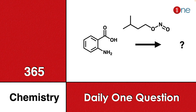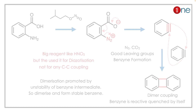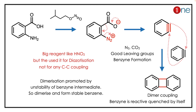Welcome to One Chemistry. This is the 365 Chemistry Series — one daily question for you. Here you have aniline and an ortho-substituted compound. You have acid; you are reacting with a nitrous acid derivative on the side chain. You have to guess what the final product will be. The reagent here is nitrous acid.